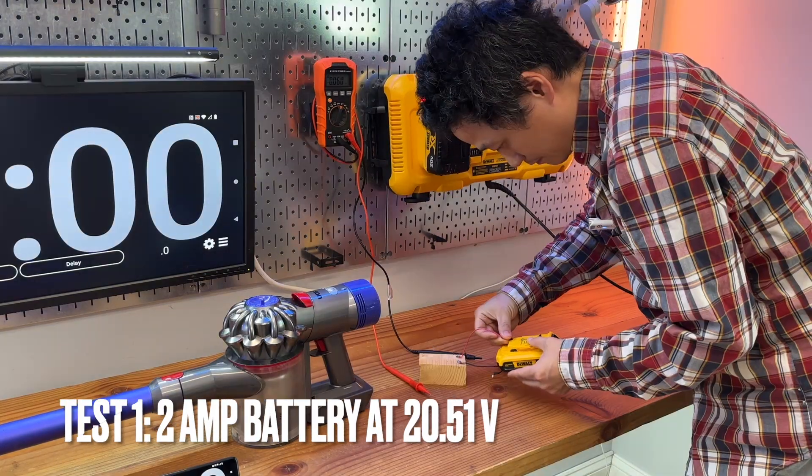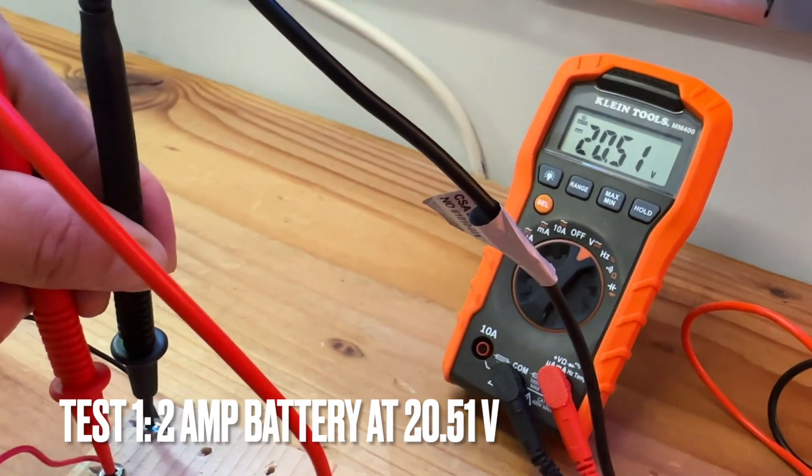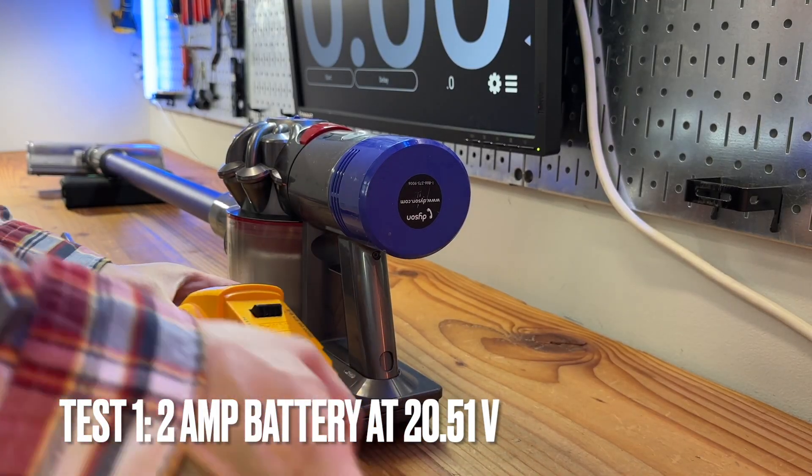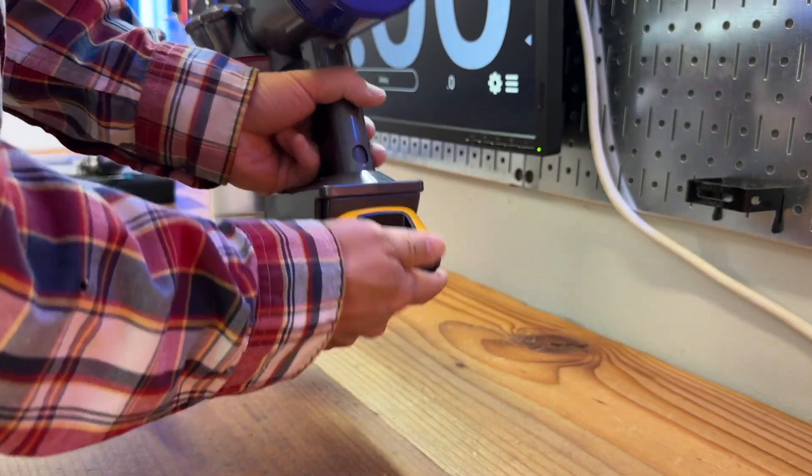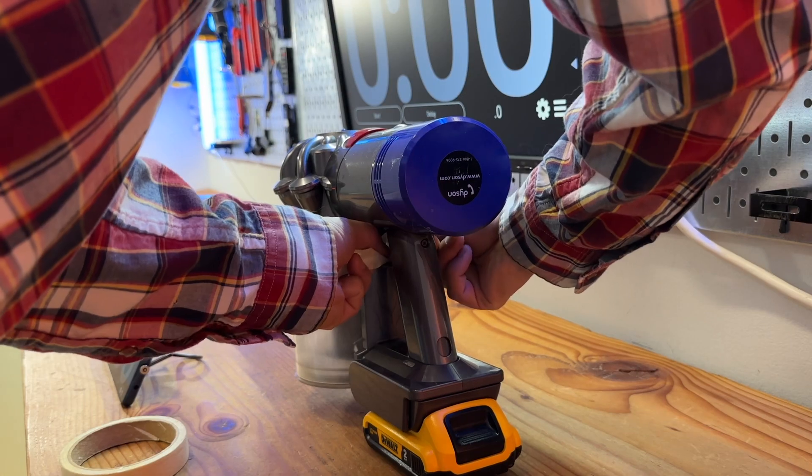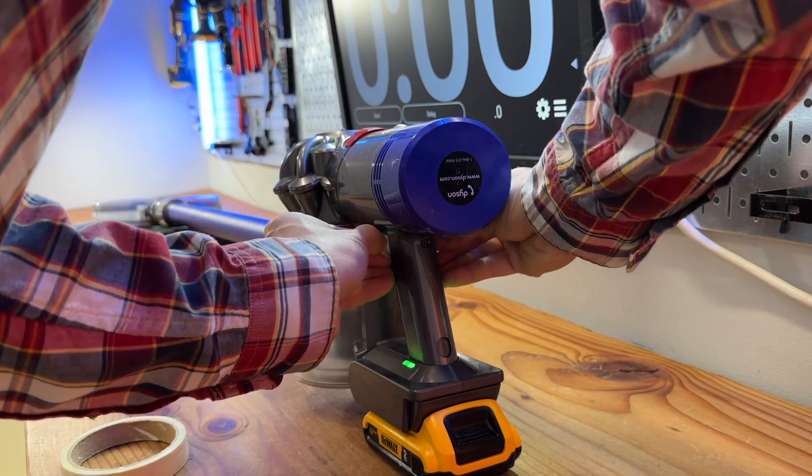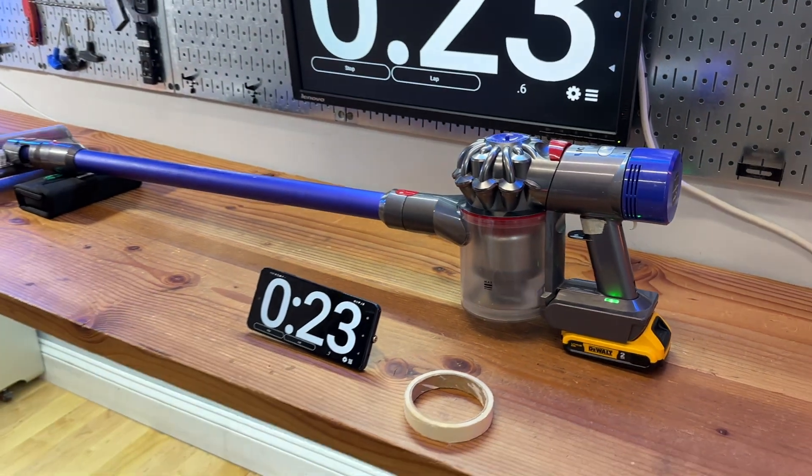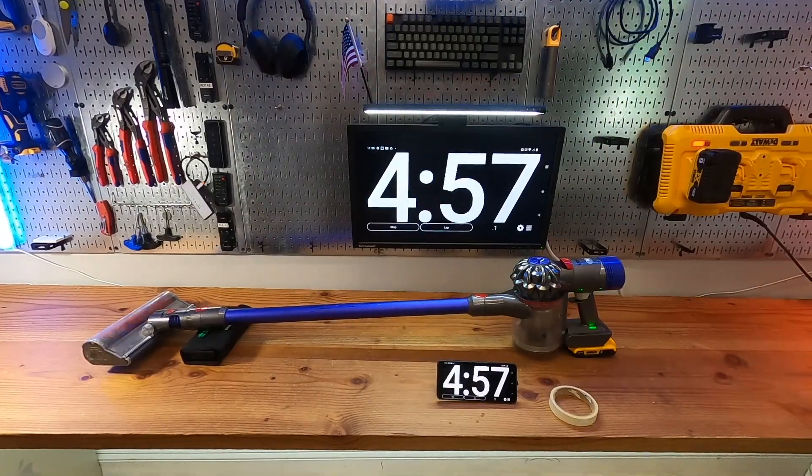The first test starts with a 3-year-old 2A battery at 20.51 volts when it's fully charged. I put a piece of tape around the trigger so it's always depressed. The time-lapse is recorded using a GoPro with a timer on the screen.